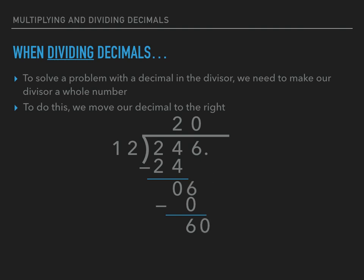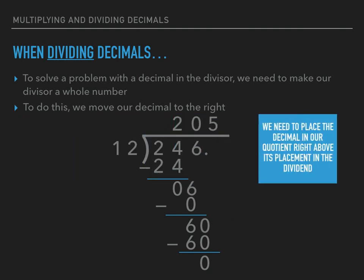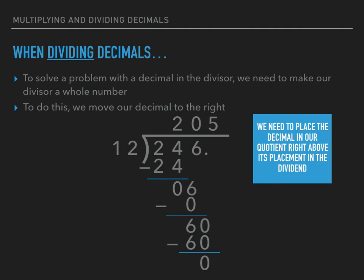I bring that zero down and continue the problem. Twelve can go into sixty five times, because twelve times five equals sixty. Subtracting sixty from sixty gives zero, so I've finished the long division. But there is one more step: we need to place the decimal in our quotient right above its placement in the dividend. That decimal place goes right above where it is in the dividend. So the answer to twenty-four and six tenths divided by one and two tenths equals twenty and five tenths.